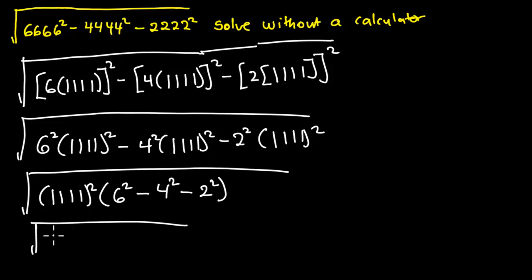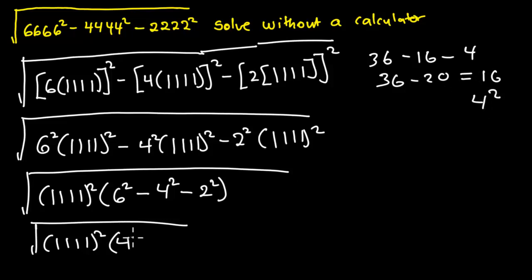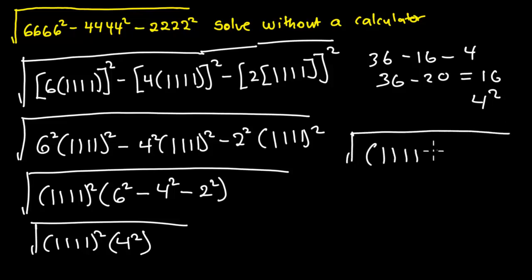So you are going to have the square root of 1111 all squared multiplying: 6 squared gives 36, minus 4 squared is 16, minus 2 squared is 4. So I will have 36 minus 16 minus 4, which gives us 16. And 16 can also be written as 4 squared. So I will have 1111 squared times 4 squared — from here the square cancels with the square root.